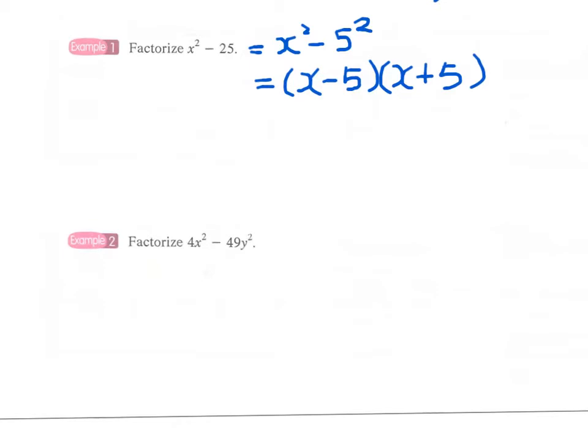Example 2: Factorize 4x squared minus 49y squared. This is a bit more difficult, but again we can write in the form of difference of two squares like this.